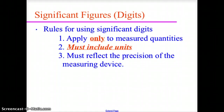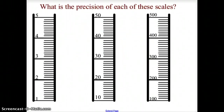Significant digits have basic rules, and they apply again to only measured quantities, and they must always include units. Those units will always reflect the precision of the measuring device. From the last video, we talked about the fact that precision is dependent upon the scale of the measuring device we're using.